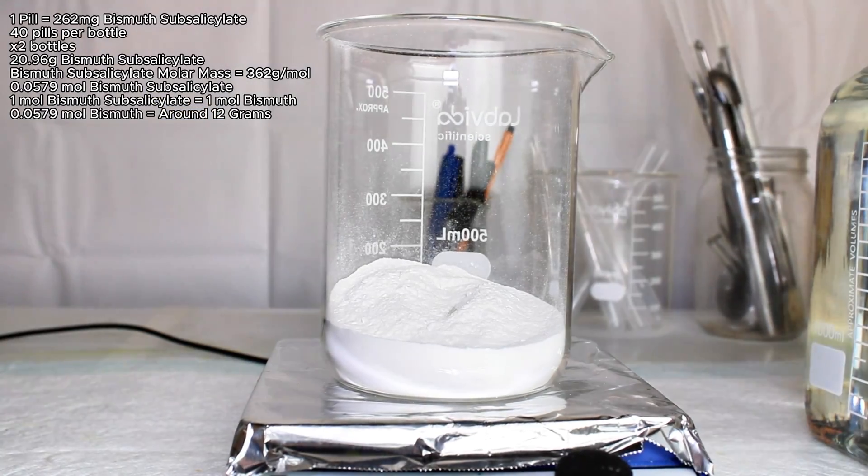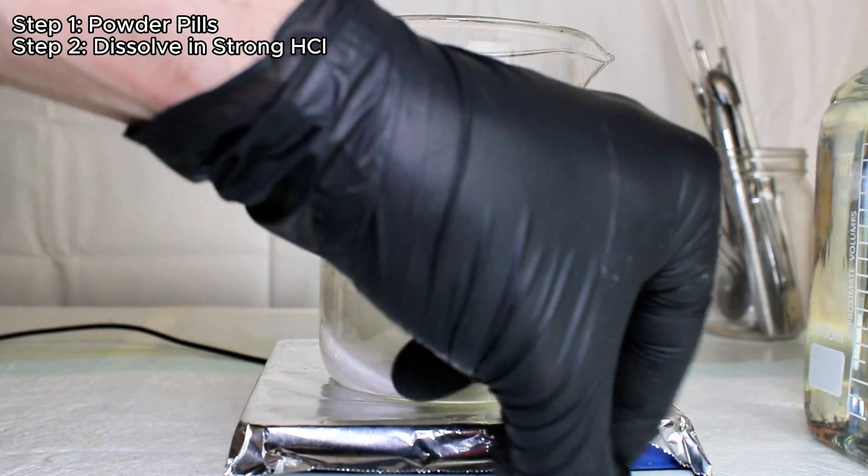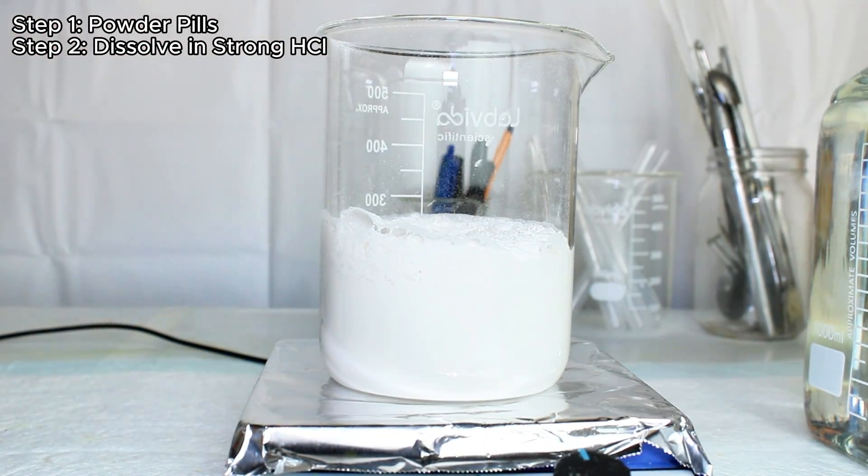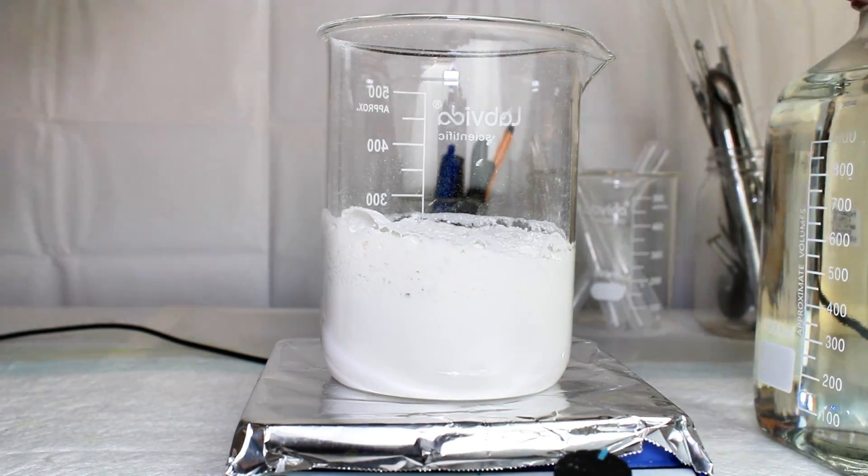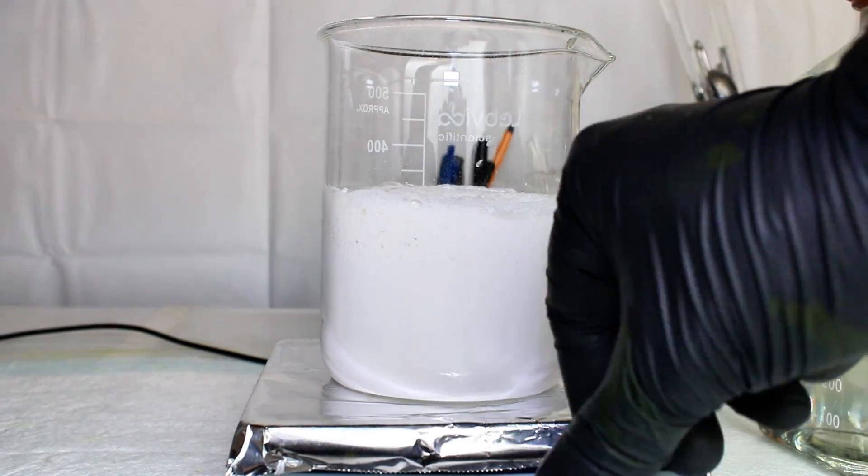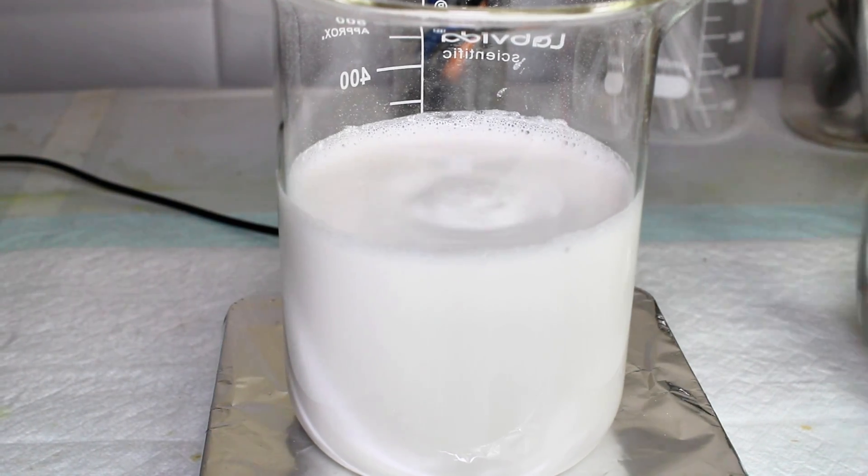To do this, I first needed to powder the pills and soak them in 400 mL of warm hydrochloric acid. I used a 12 molar solution here diluted down to 4 molar to be safe, but you could probably get away with using an even lower concentration. The role of the hydrochloric acid here is to dissolve the bismuth subsalicylate, forming salicylic acid and soluble bismuth chloride.